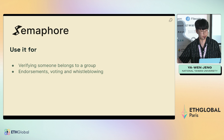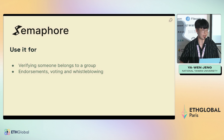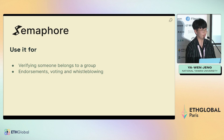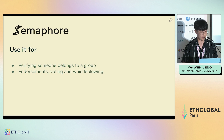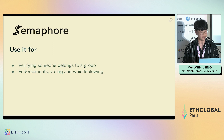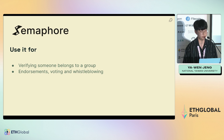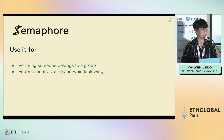What Semaphore can do is let you prove that you are a member of a group without revealing who you are. You can also endorse a signal — include a signal in the proof to prove that you want to say something.